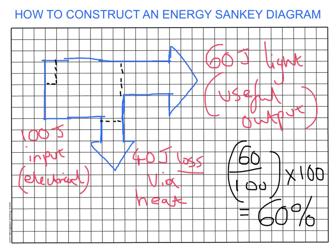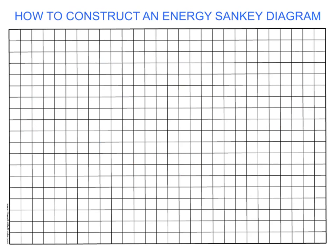Let's do a second example with two losses so you can see what that would look like. We'll stick with five squares, so we're going to pretend we've got 25 joules input. This is electrical energy — let's say this is a hair dryer. We're going to draw a Sankey diagram to show the energy transfers in the hair dryer. We have 25 joules coming in. You sometimes lose energy as kinetic energy — moving energy — because in the hair dryer, when you turn it on, you get some movement of the fan inside.